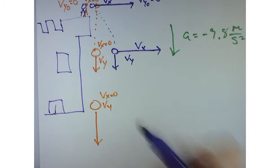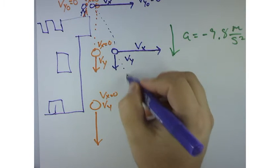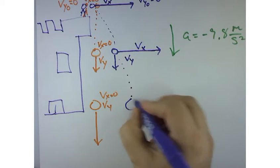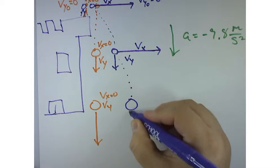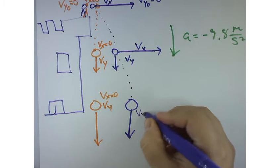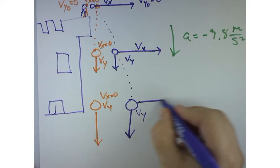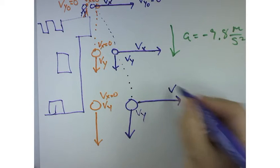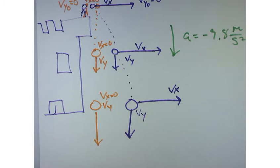Now, the stone continues on its free fall path. It has the same velocity in the y direction as the ball, but it's maintained its x velocity. What is the resultant velocity?